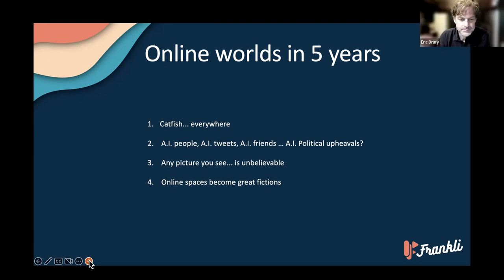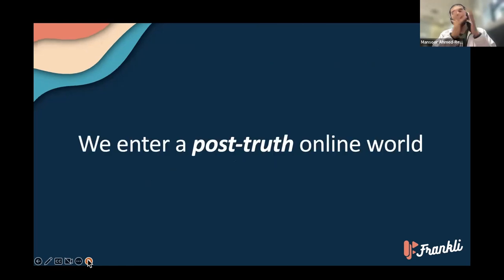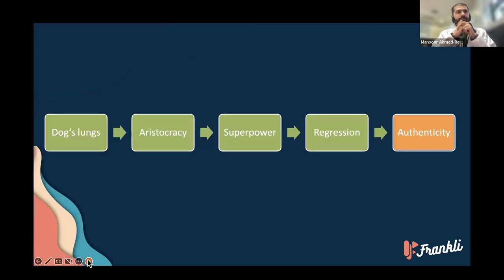Any picture you see becomes unbelievable — not in the sense that it's amazing, but in the sense that it's just unbelievable. Online spaces become great fictions where the only things you can trust are those in your offline world — interpersonal connections. We call this a post-truth world, and I think this post-truth is a lot more real than the term's previous usage. That's where we are, and now I'll hand over to Matty to see how he's going to save us all.